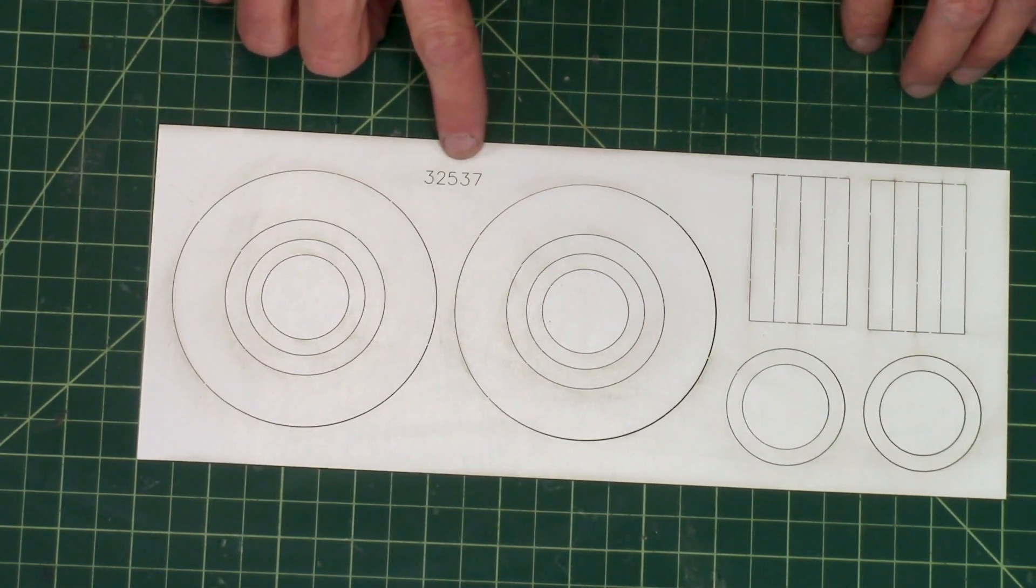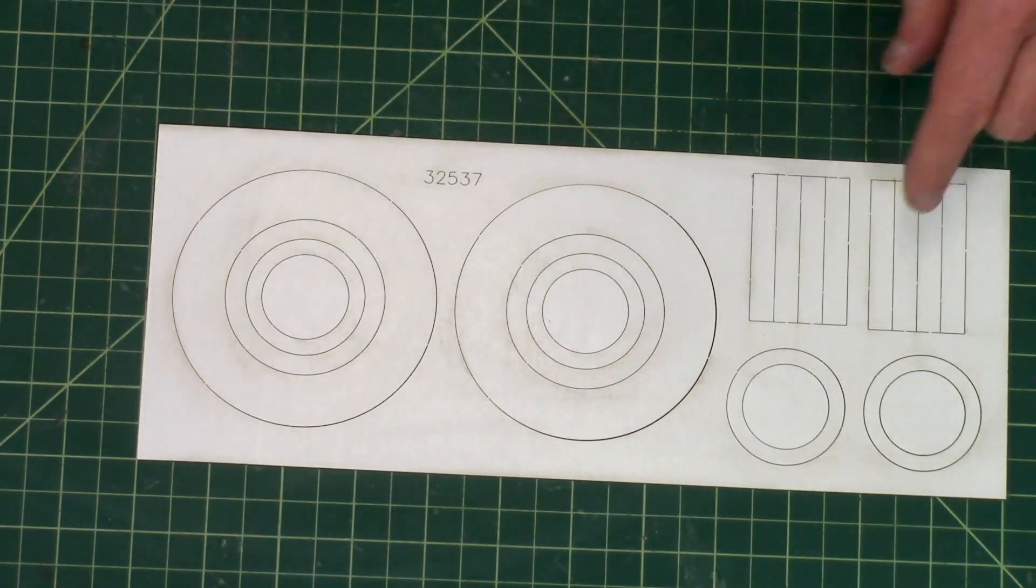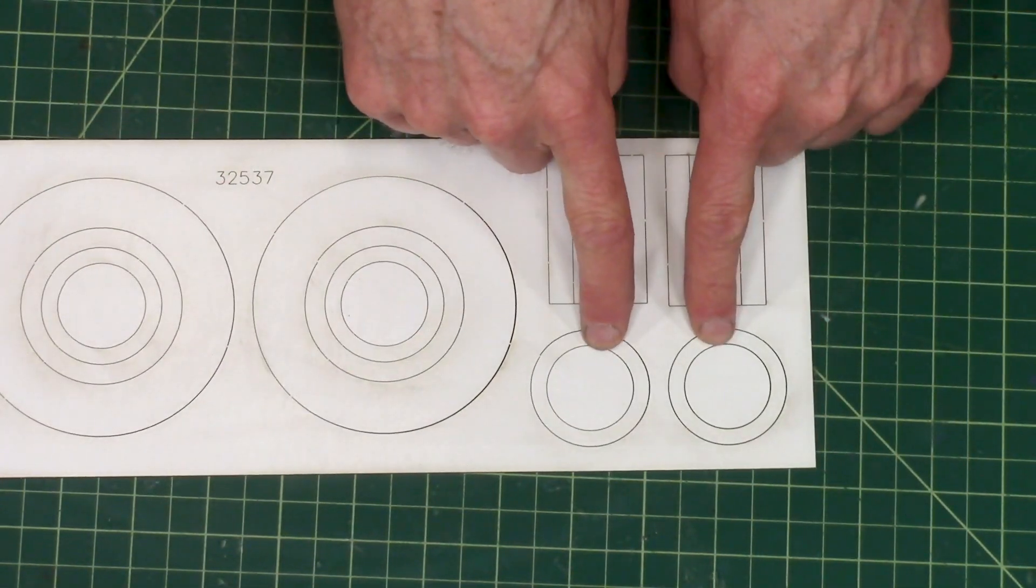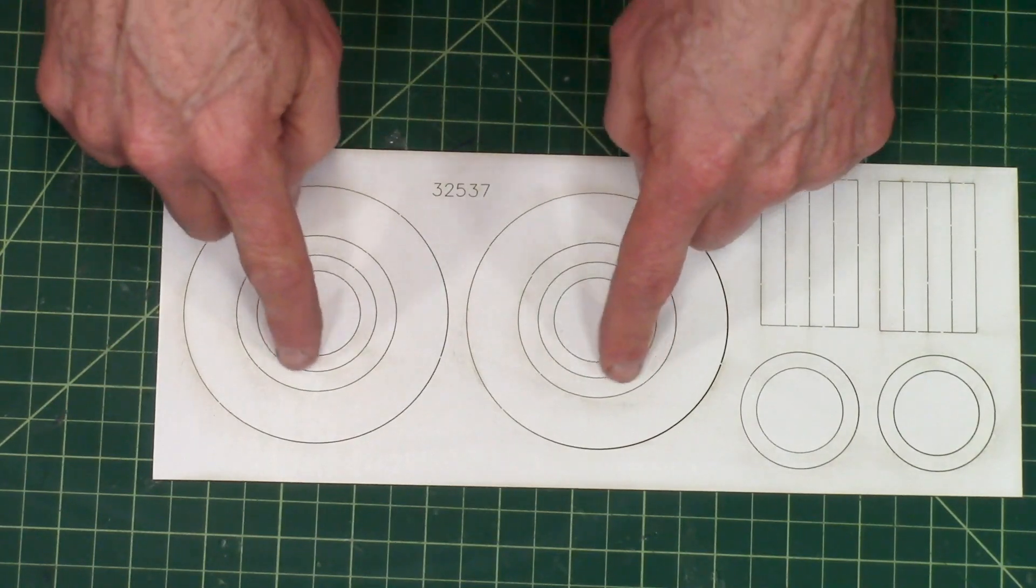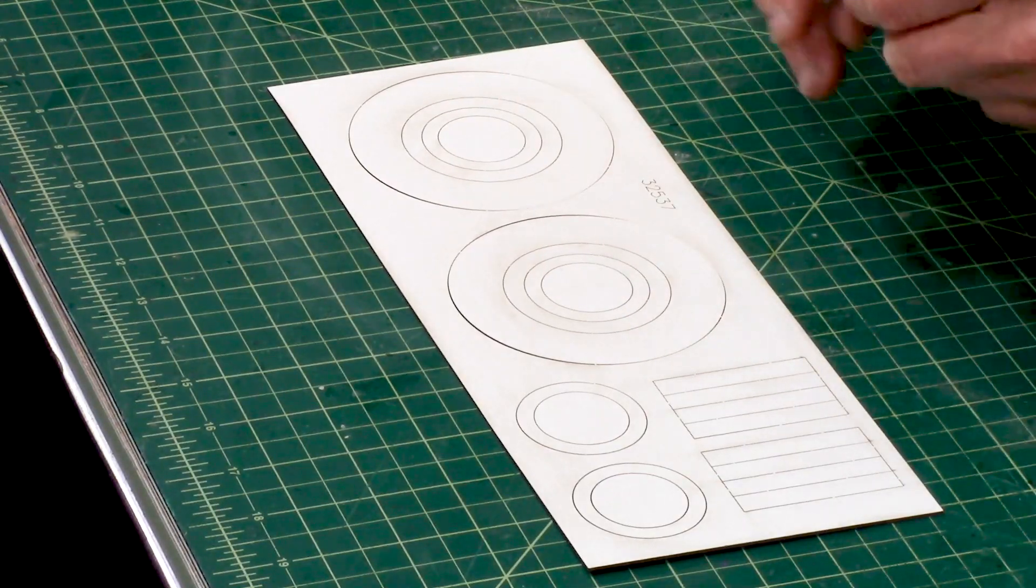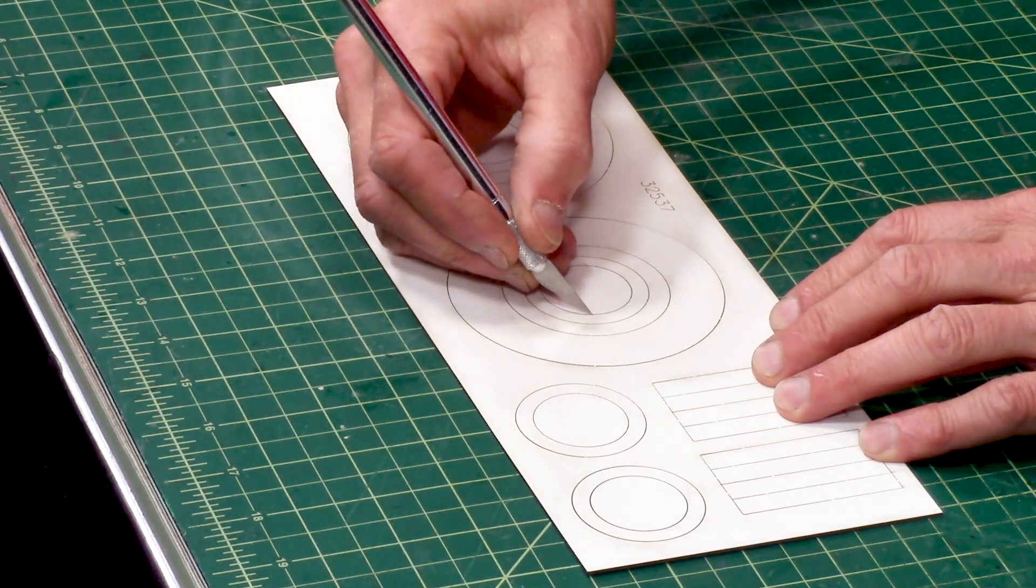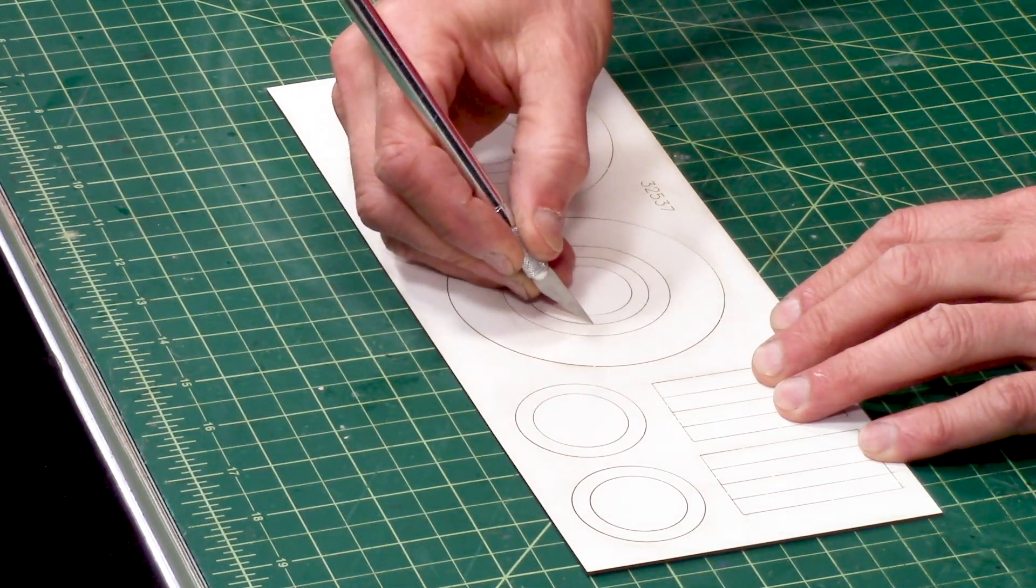It's 32537 and we want to take out four centering rings. We want these two right here and then these two inner ones on the sheet. There are little tick marks that hold them into the sheet and you can just snap those through with a hobby knife.